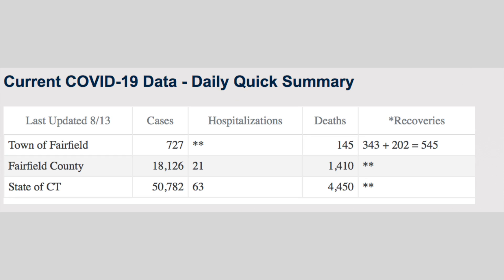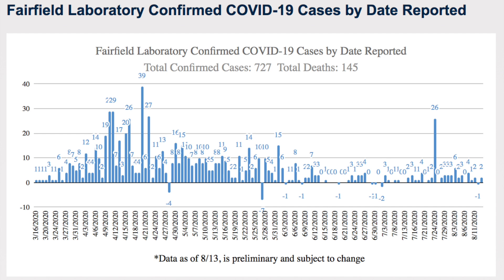Right at the top of our page, we have a chart, which is our daily update chart. This is just a quick chart of numbers showing where we are for that day. And right underneath there, you'll see a graph — this is the Fairfield total cases by date reported. This is the date that the state of Connecticut gives us our cases for the day.